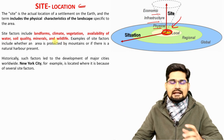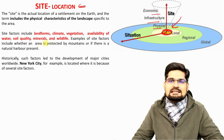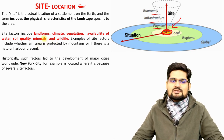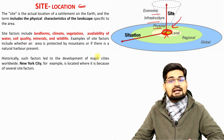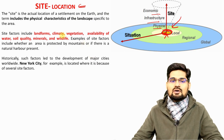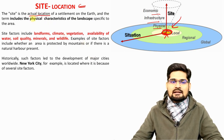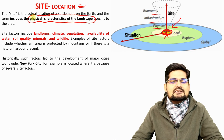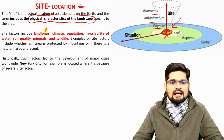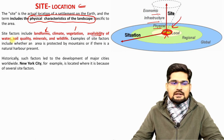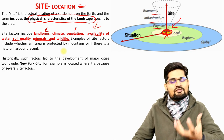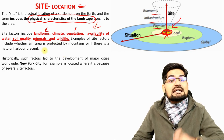In an Indian context, most North Indian cities are along the banks of major rivers. Site is the actual location and it includes physical characteristics of the landscape — landforms, climate, vegetation, availability of water, soil quality, minerals, wildlife and several other natural physical factors. These are the site factors.